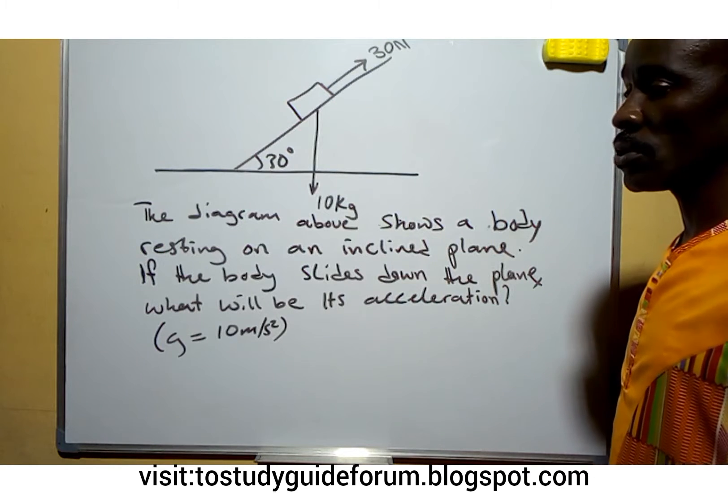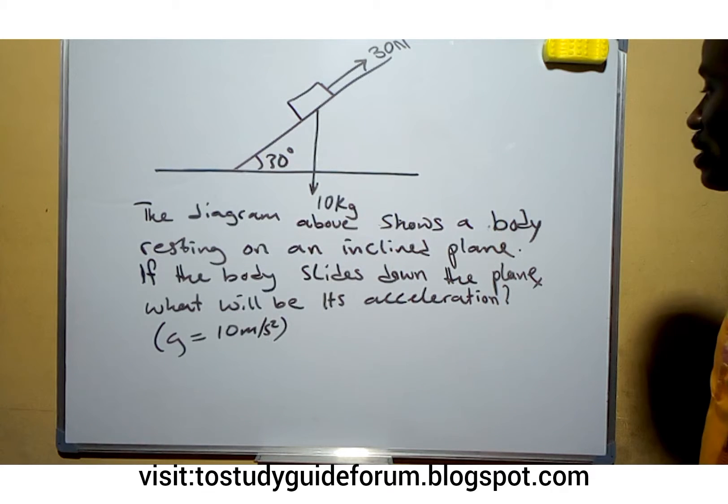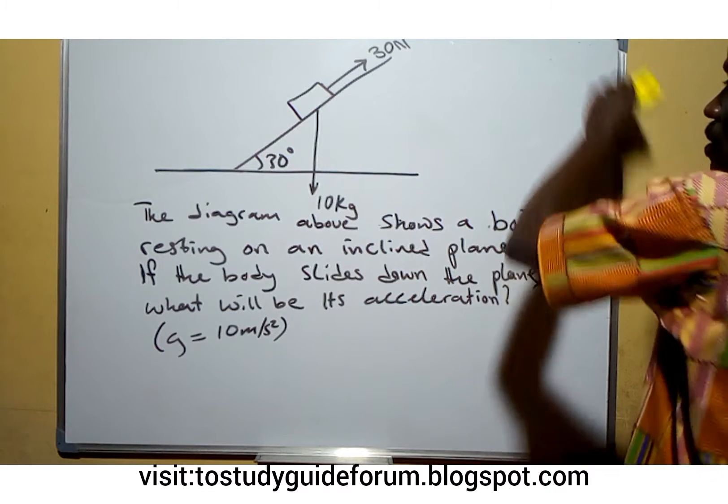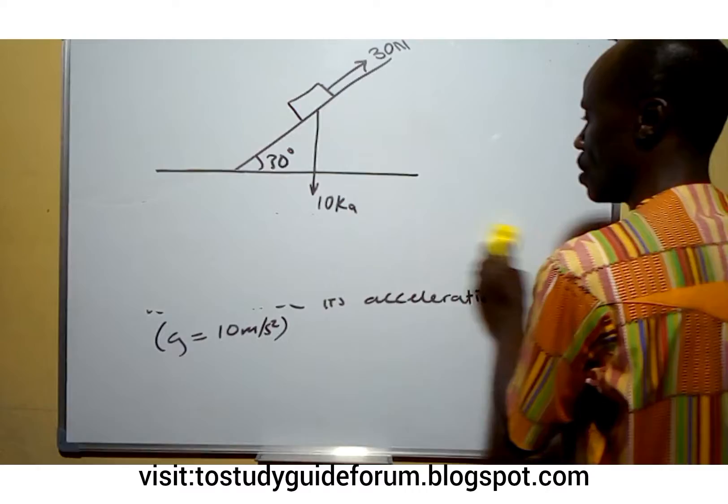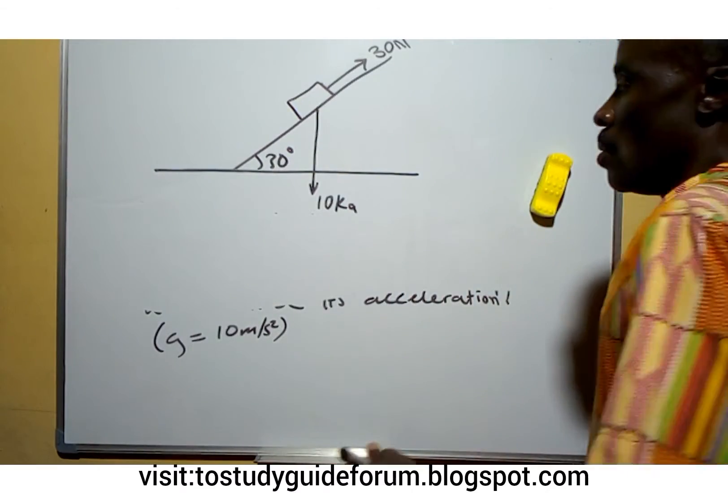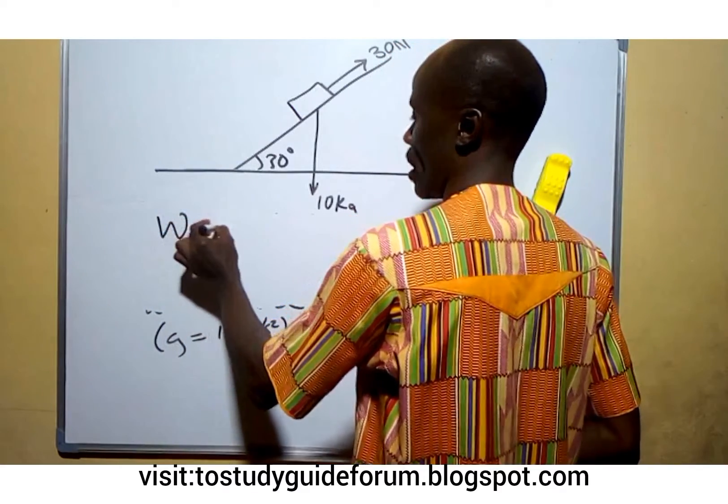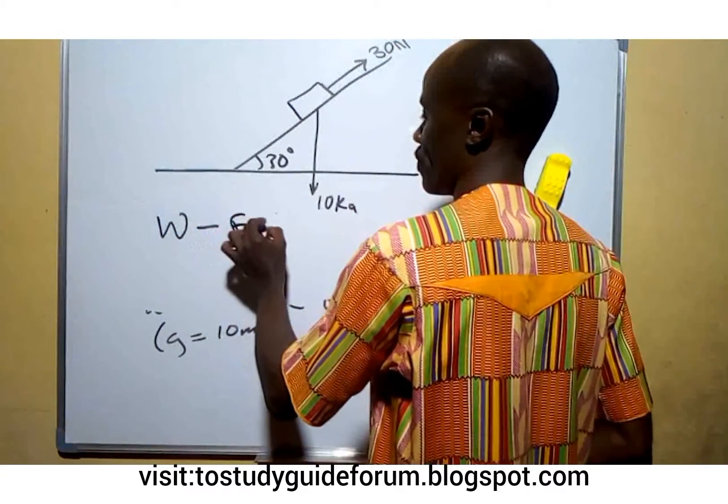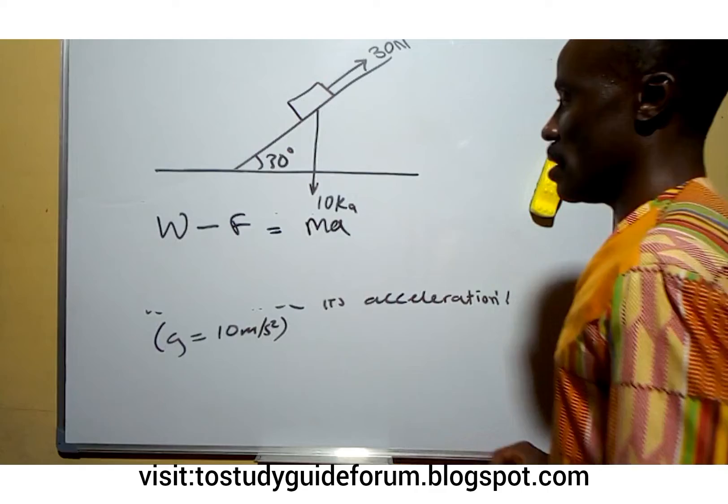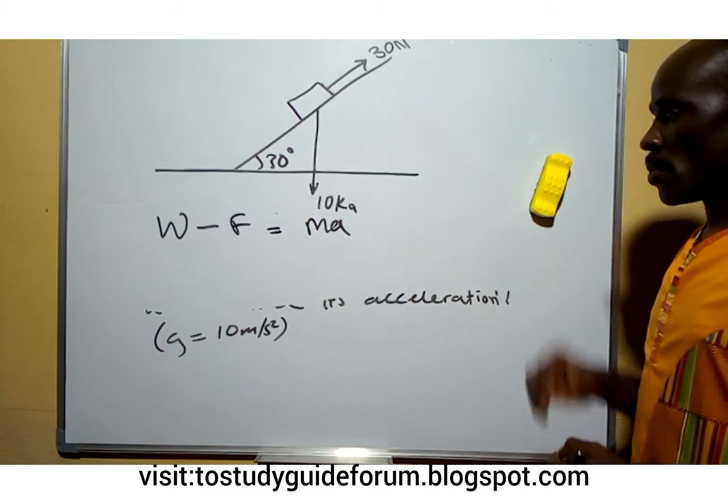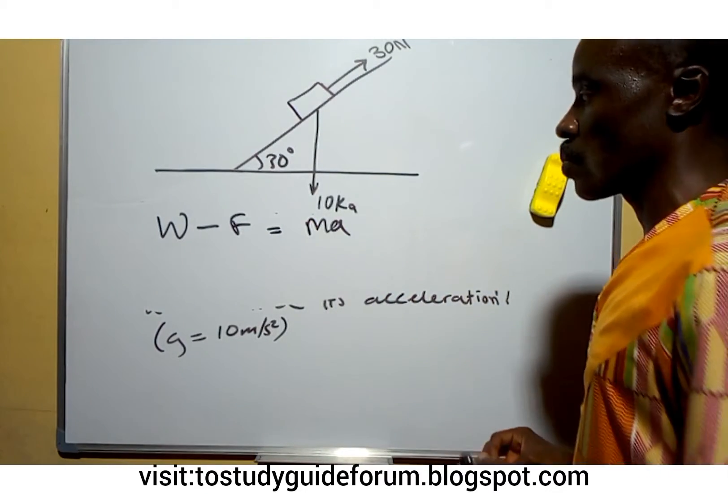So now we have to find the acceleration. To do this, let's go down to business. We know that weight minus F equals mass times a, which is the acceleration. W stands for the weight and F is for the frictional force.